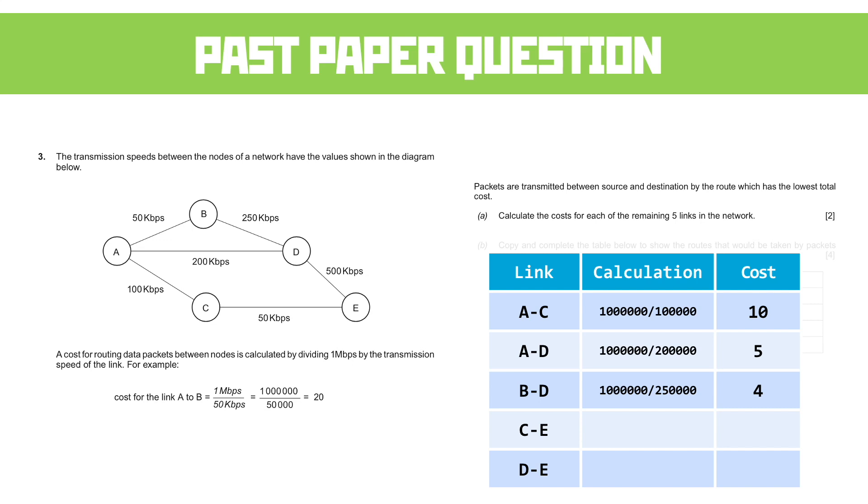C to E is a million divided by 50,000, giving us a cost of 20. And D to E is a million divided by 500,000, giving us a cost of 2.